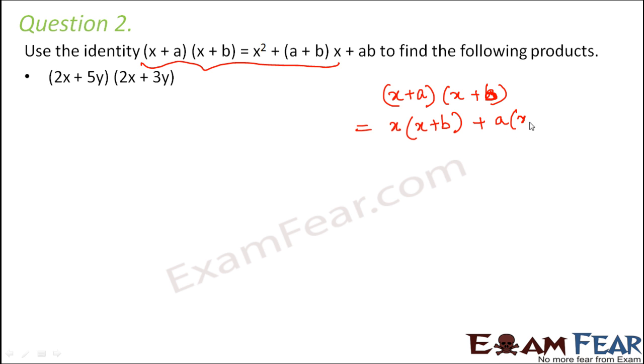By actual multiplication it would be: x(x + b) + a(x + b), which equals x·x + x·b + a·x + a·b, that is x² + bx + ax + ab, which equals x² + (a + b)x + ab.